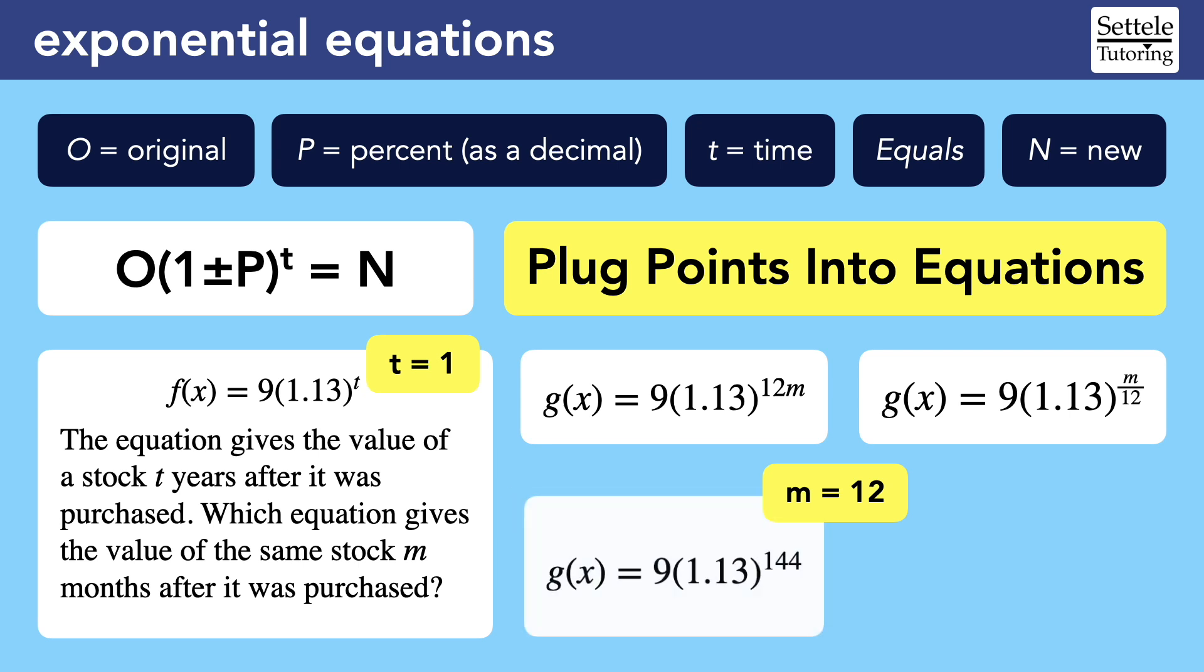We need the m equation to produce the same 13% increase we saw in the original t equation. But if we substitute 12 into the first option, we see that we're not simply multiplying 9 and 1.13. We would be raising 1.13 to the 144th power, which is crazy. That's going to give a vastly different value for the stock after one year. The other equation works out nicely. The exponent would be 12 over 12, which is 1. So we can see that the math on the right is the same as the math on the left when we plug in the same amount of time, one year and 12 months. Now we have proof that the second equation is correct.